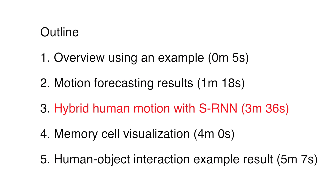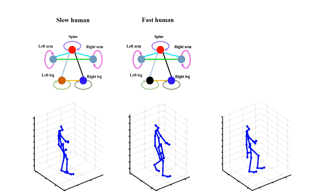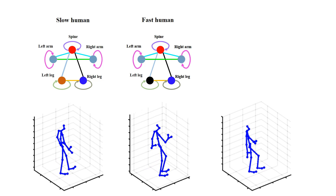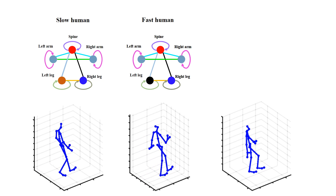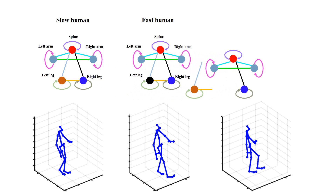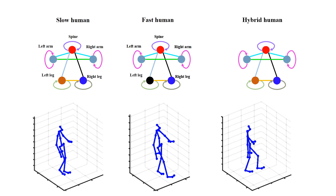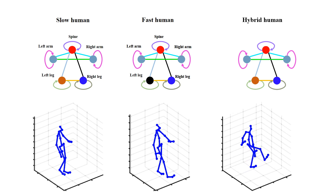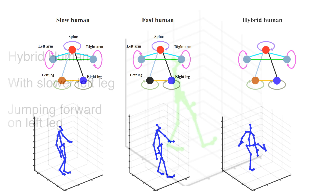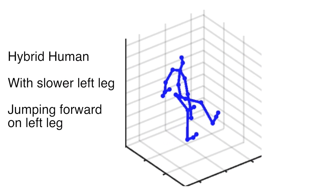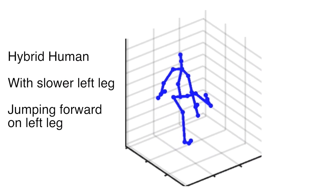The underlying structure of sRNN further allows high-level manipulations yet enjoying a deep architecture. This example shows how we generate a new feasible action that does not exist in the dataset without any retraining, and just by semantic manipulation to the architecture.